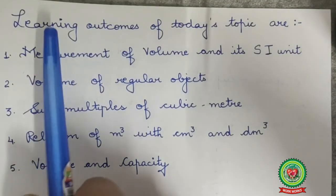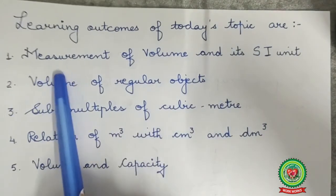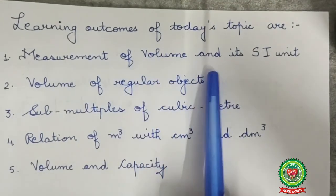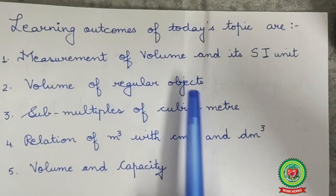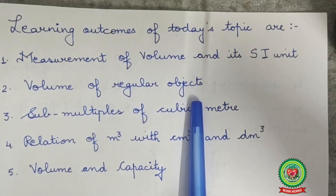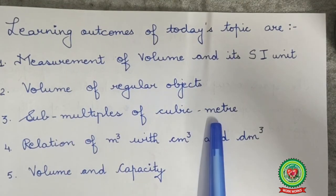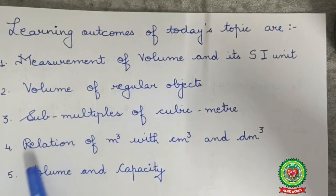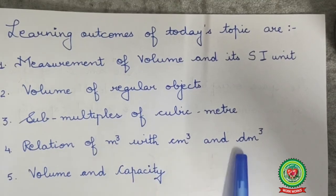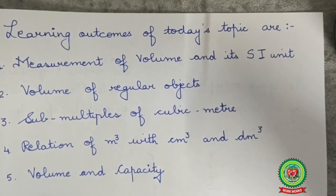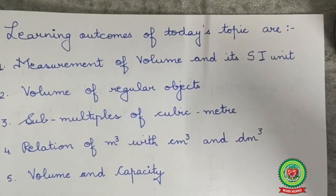The learning outcomes of today's topic are: measurement of volume and its SI unit, volume of regular objects, sub-multiples of cubic meter, relation of meter cube with centimeter cube and decimeter cube, and volume and capacity. We use sub-multiples of meter cube for smaller measurements. Thank you.